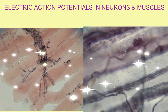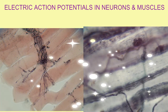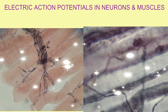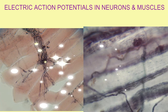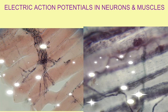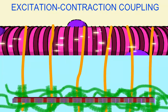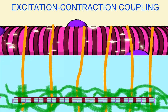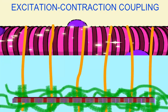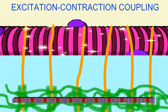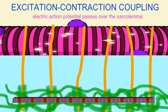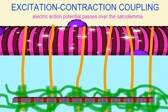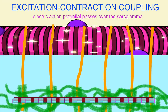Nerve cells and muscle cells are both excitable cells capable of conducting electric action potentials. When the electric action potential of a nerve cell causes the electric action potential in a muscle cell, this electric message spreads over the excitable cell membrane of the muscle cell.